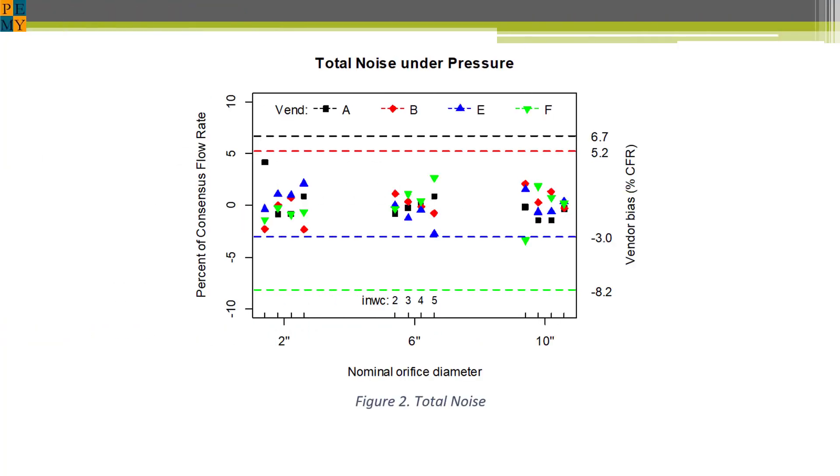This figure shows the total noise less the vendor bias. Total noise has three components, vendor by diameter bias, vendor by pressure bias, and pure error or residual, which is strictly random variation.